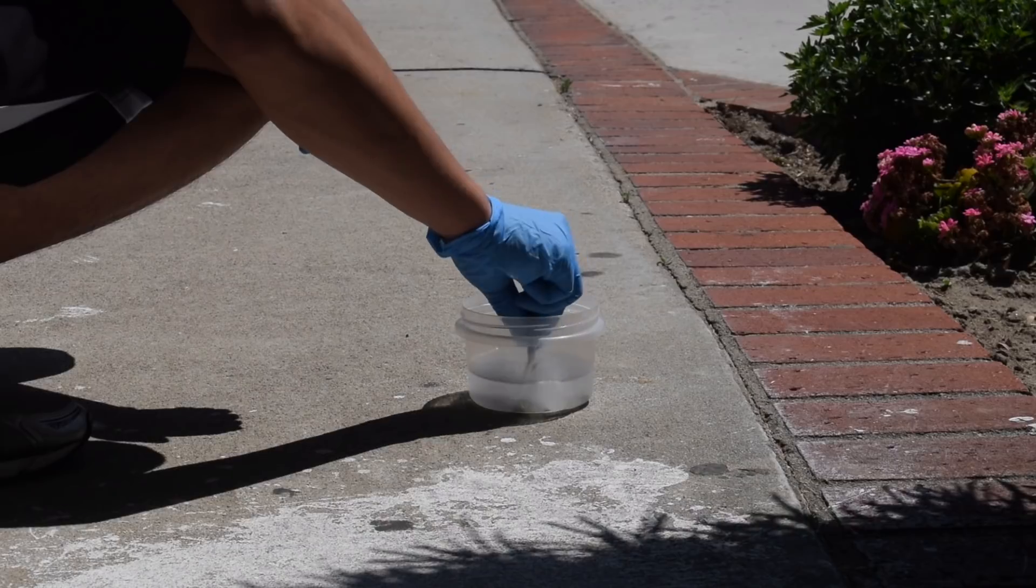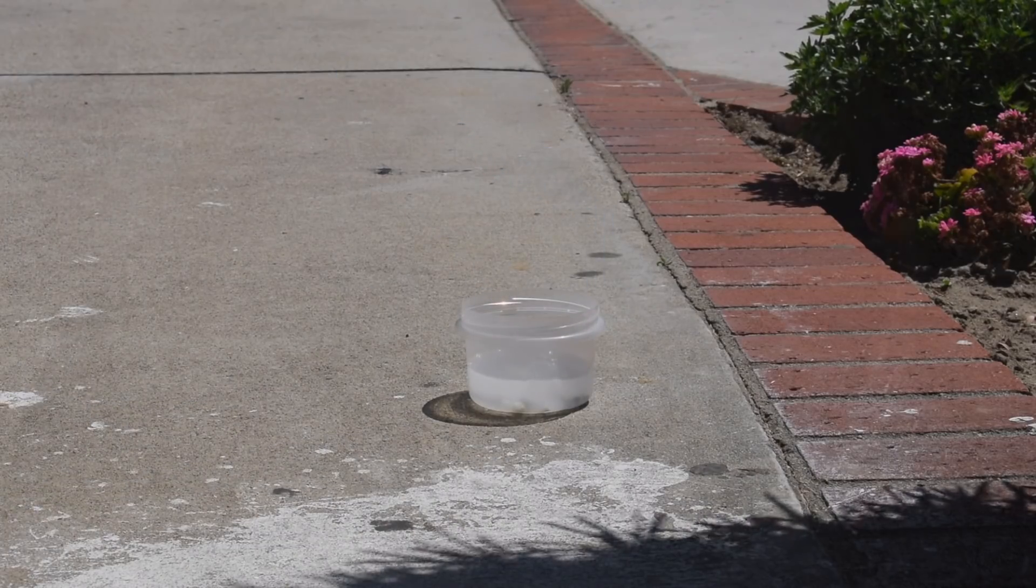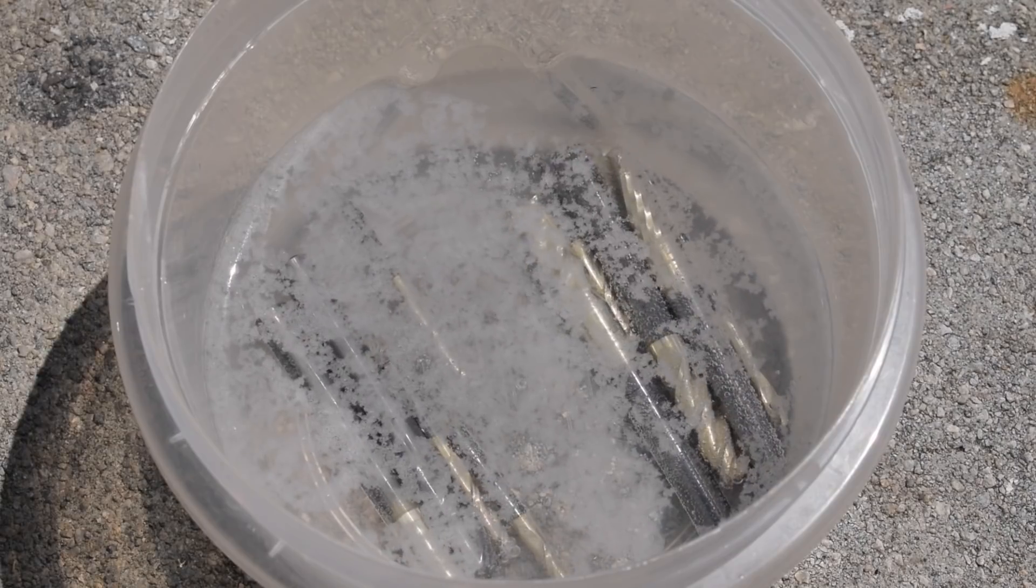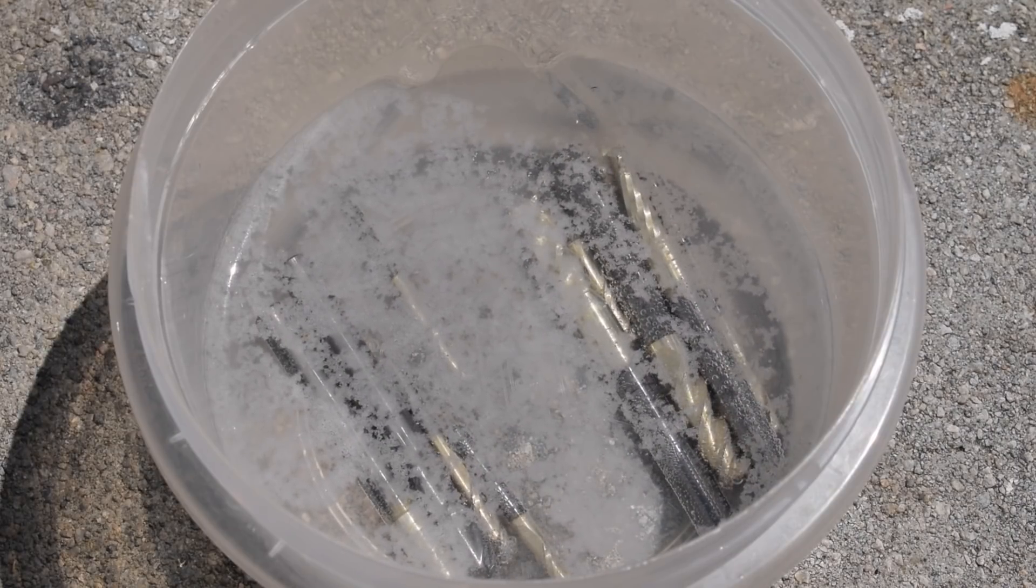Zirconium nitride coatings are immune to the effects of sodium hydroxide and as far as I can tell, plain carbide is barely affected if at all. So if you want to play it safe, you can stand your end mills up in the container and submerge only the coated part.